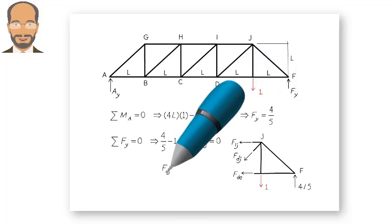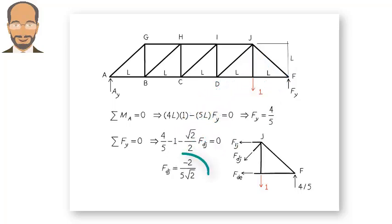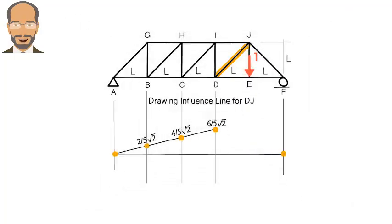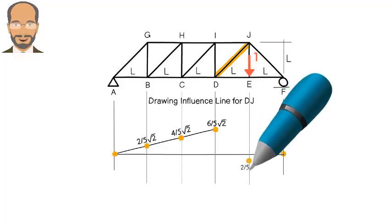This time we get negative 2 over 5 square root of 2. This means when the load is at E, the member undergoes compression. We plot the point below the x-axis and complete the graph.